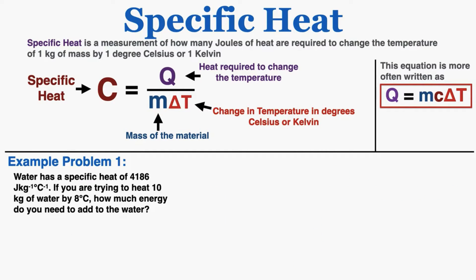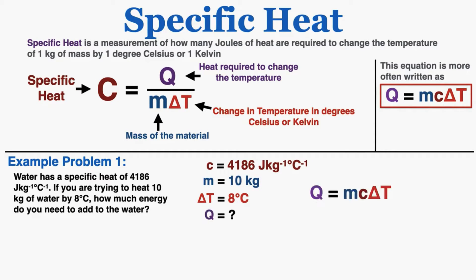This equation is pretty easy to use — I'm just going to do some example problems. Water has a specific heat of 4,186 joules per kilogram degree Celsius. If you're trying to heat 10 kilograms of water by 8 degrees Celsius, how much energy do you need to add to the water? Writing down what I know — the specific heat, the mass, and the change in temperature — and plugging that into the equation gets me 334,880 joules.